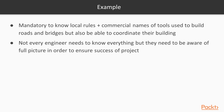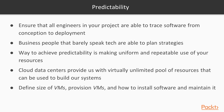Coming back to containers and DevOps, making concepts simple for everyone to understand is something that is mandatory nowadays. You want to ensure that all the engineers in your project are able to trace the software from conception to deployment. Also, have predictability in mind so that the business people who barely speak tech are able to plan strategies around the products that you build. One of the keys to achieving this flow is predictability, and the way to achieve it is through uniform and repeatable use of your resources. Cloud data centers such as Amazon Web Services or Google Cloud Platform provide us with a virtually unlimited pool of resources that can be used to build our systems in a traditional way — defining the size of the VMs, provisioning VMs, how to install the software, and maintaining it.